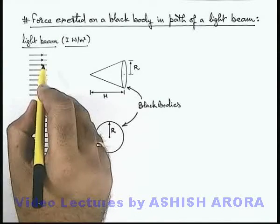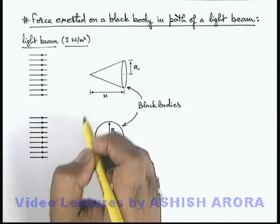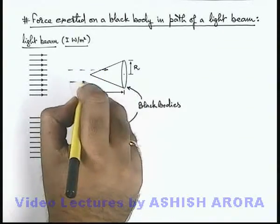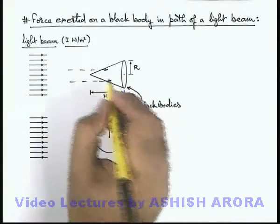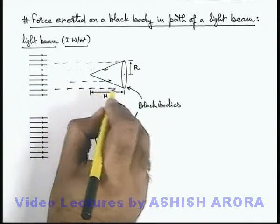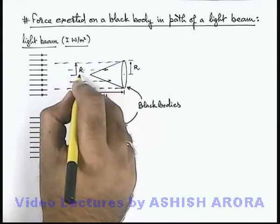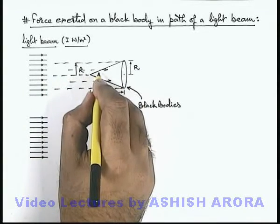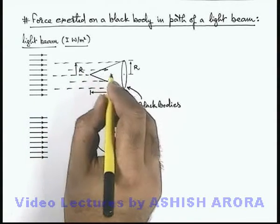Now in this situation, when this light beam is incident on this conical surface, as it is a black body, the photons that are incident on the surface will be absorbed in the same direction. So all photons which are in the beam of radius r will be incident on the cone, will be absorbed by it, and will exert their whole momentum on the cone.